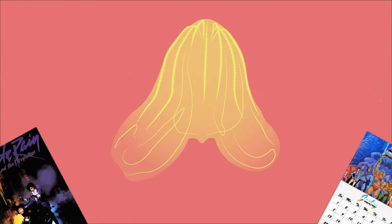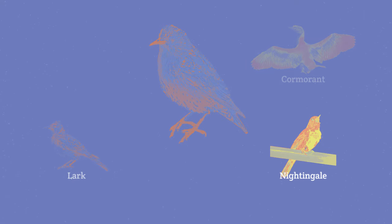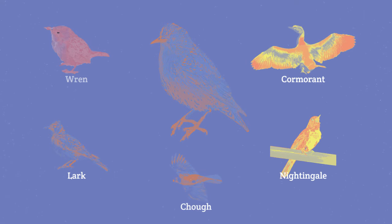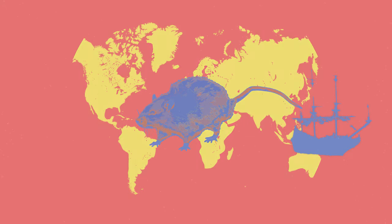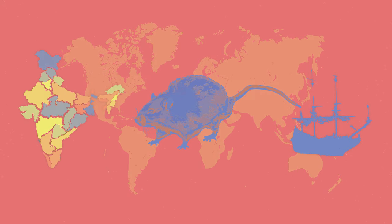In the early 80s, warty comb jellies were introduced from North America to the Black Sea when they were hitching a ride in the ballast waters of oil tankers. The common starling made its way to North America by way of Eugene Schieffelin, who tried to introduce every bird mentioned in the works of William Shakespeare — for some reason. And lastly, the black rat, which is now found across the globe thanks to shipping from their native home of India.